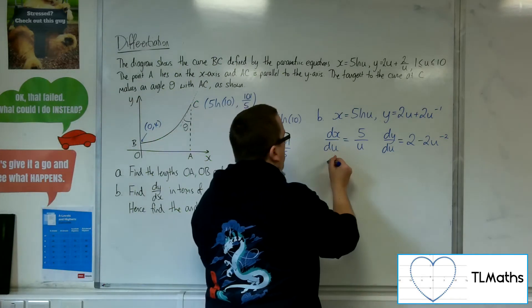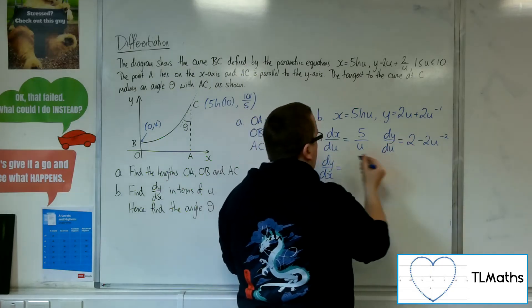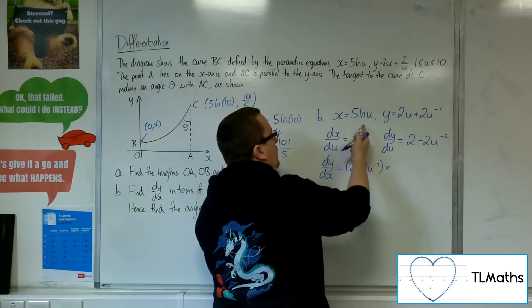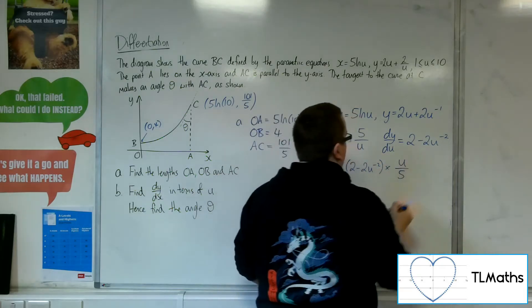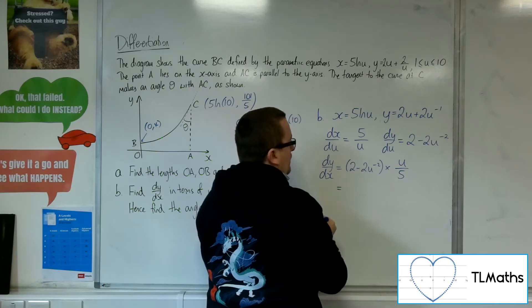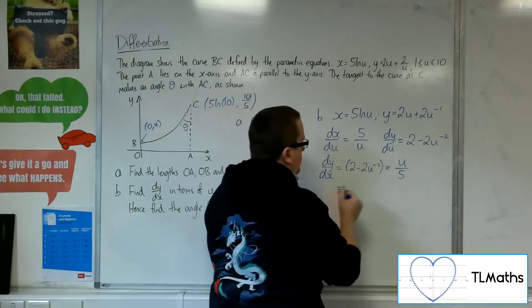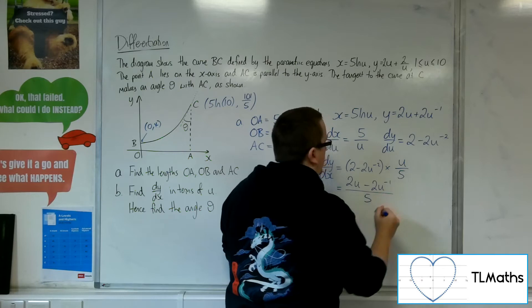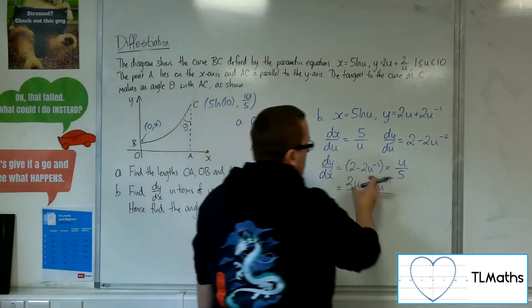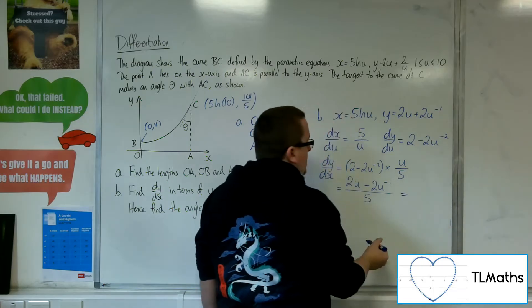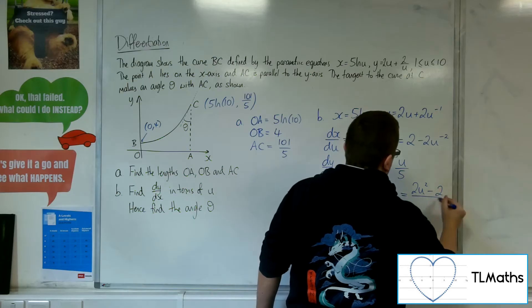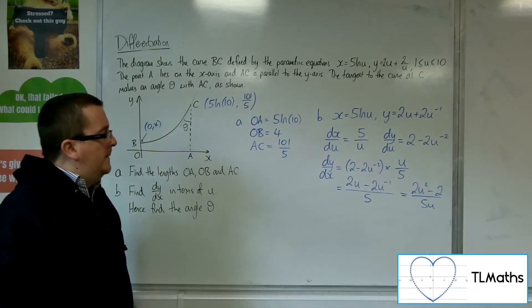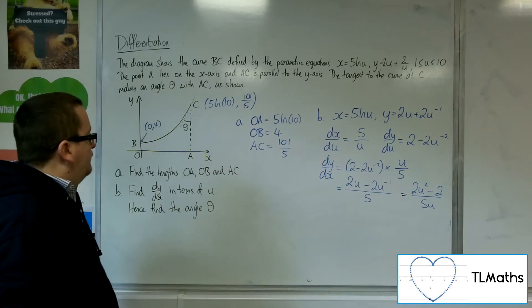So dy by dx is dy by du times by du by dx, which is 1 over this, so that's u over 5. So let's tidy this up, because if I multiply this bracket out with the u, I'd have 2u minus 2u to the minus 1 all over 5. Now I don't like the negative power being inside the fraction. So I'd multiply top and bottom by u, giving me 2u squared minus 2 all over 5u. So that is a preferable version of it.